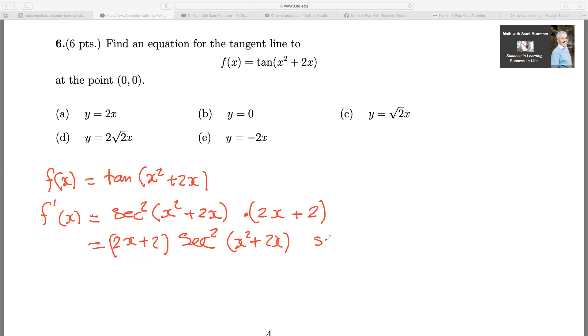So if we sub in 0 and 0 here, I'm going to get f prime of 0, and basically what you're doing, you just sub in the x value because you don't need the y value in this situation right here.